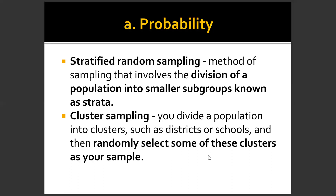Stratified random sampling is a method of sampling that involves the division of a population into smaller subgroups known as strata — for example, per section or per year level. This is what is commonly used in our research study. Usually in our institution, we use stratified random sampling.